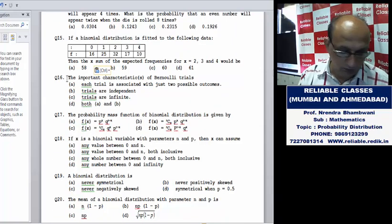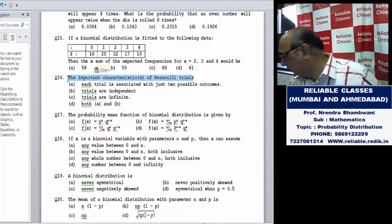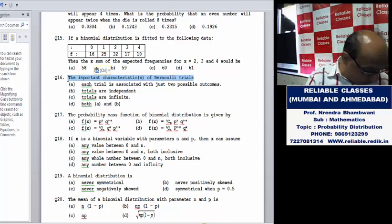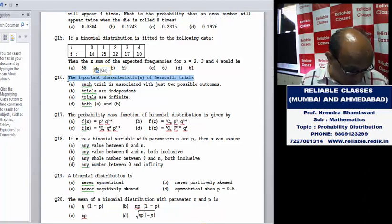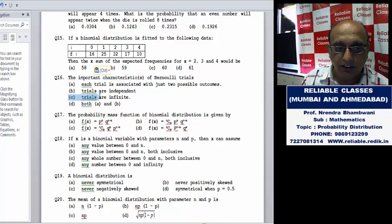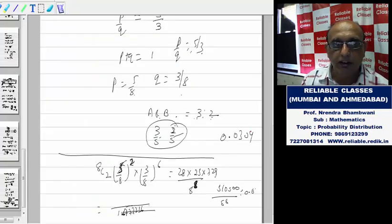The important characteristics of a Bernoulli distribution, a binomial distribution: each trial is associated with just two possible outcomes, trials are independent, trials are finite. So we have two possible outcomes and trials are independent.